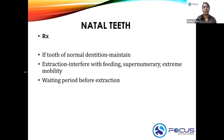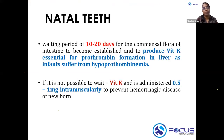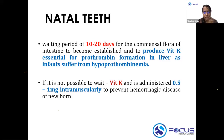Before extraction, keep in mind that clotting factors are not fully established in a newborn or infant within the first 30 days of birth. Therefore, a waiting period of 10 to 20 days is required before extracting a natal tooth. This waiting period allows the commensal flora of the intestine to form and produce vitamin K, which is essential for prothrombin formation in the liver — because infants suffer from hypoprothrombinemia.